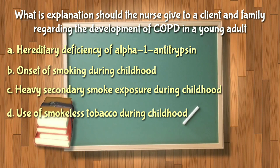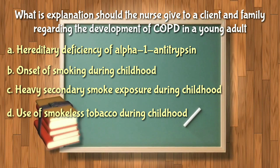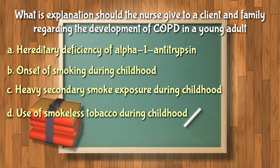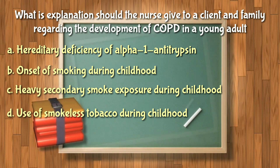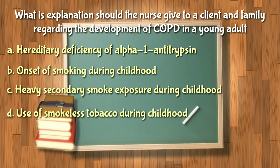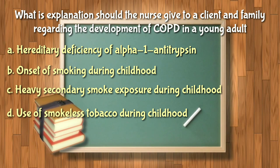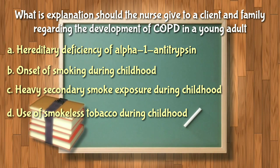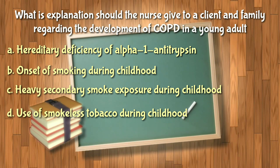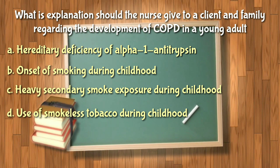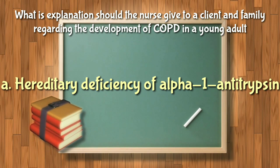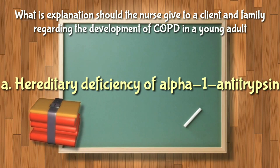Onset of smoking during childhood, heavy secondary smoke exposure during childhood, and use of smokeless tobacco during childhood are not typically associated with early onset of the physiological alterations of COPD. The final answer is letter A: hereditary deficiency of alpha-1 antitrypsin.